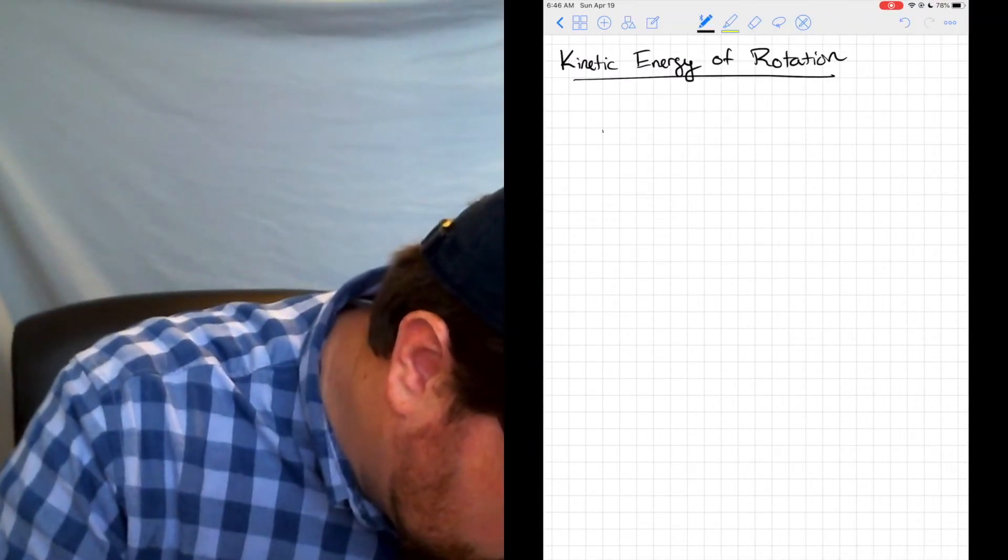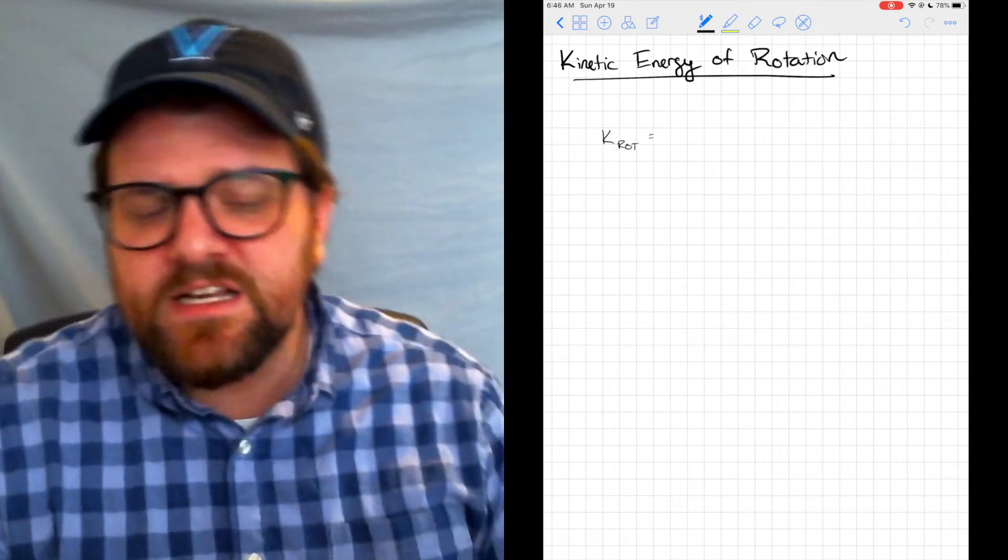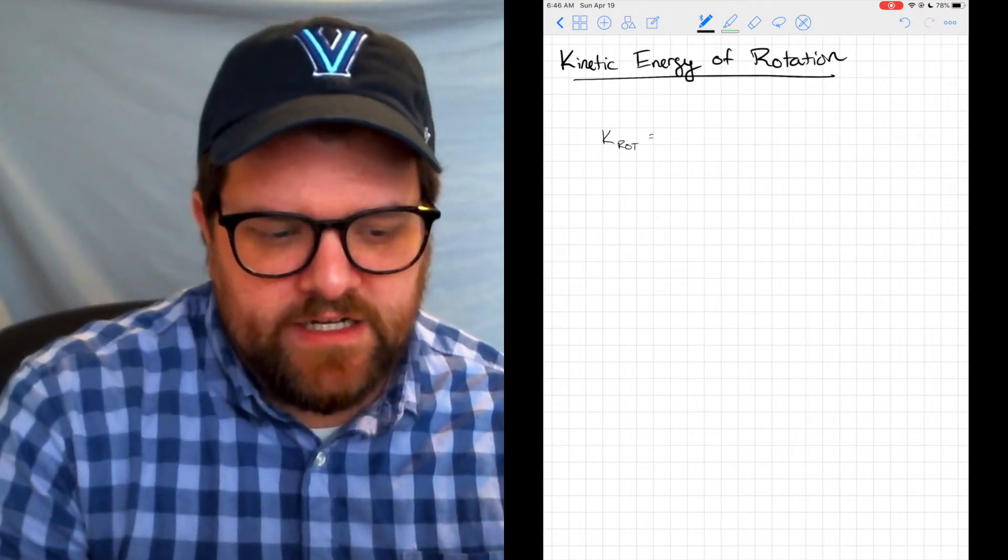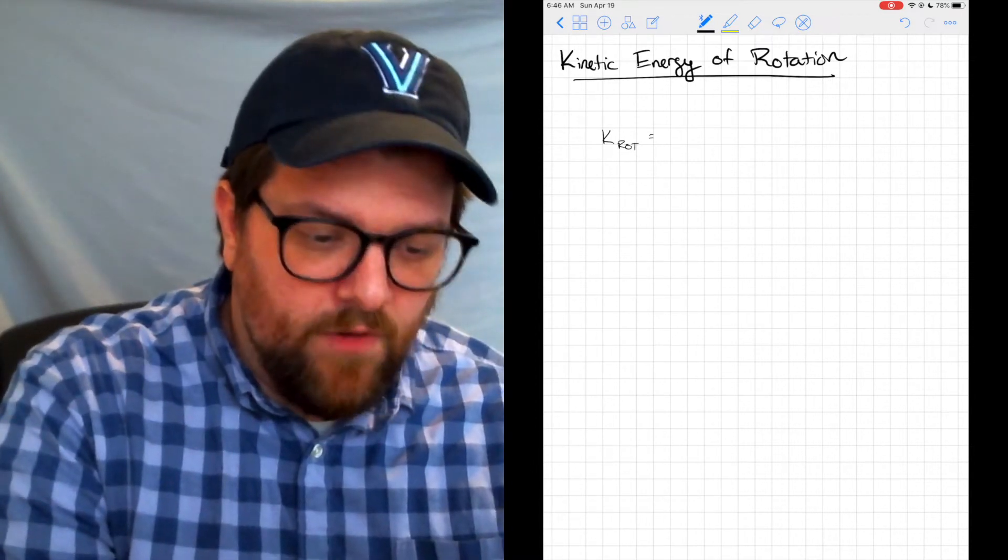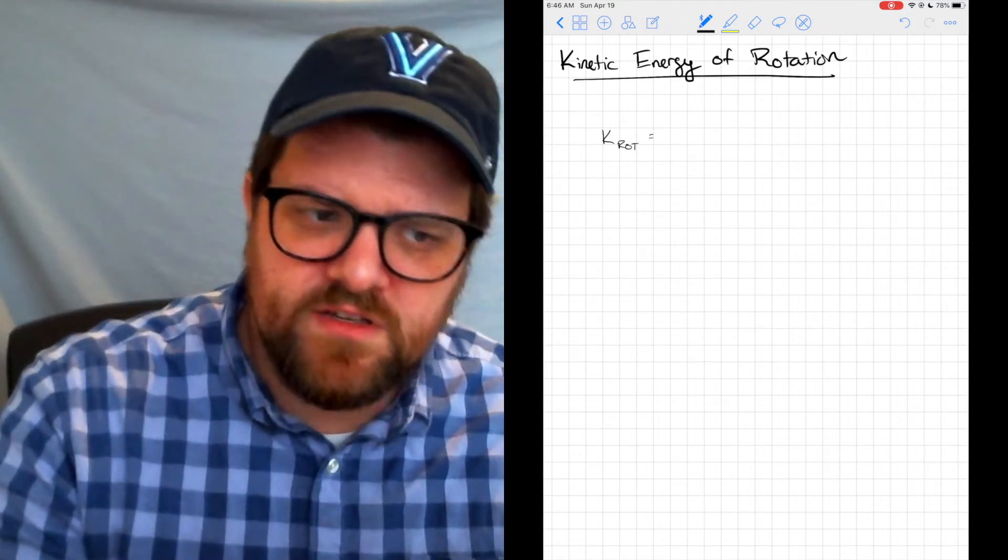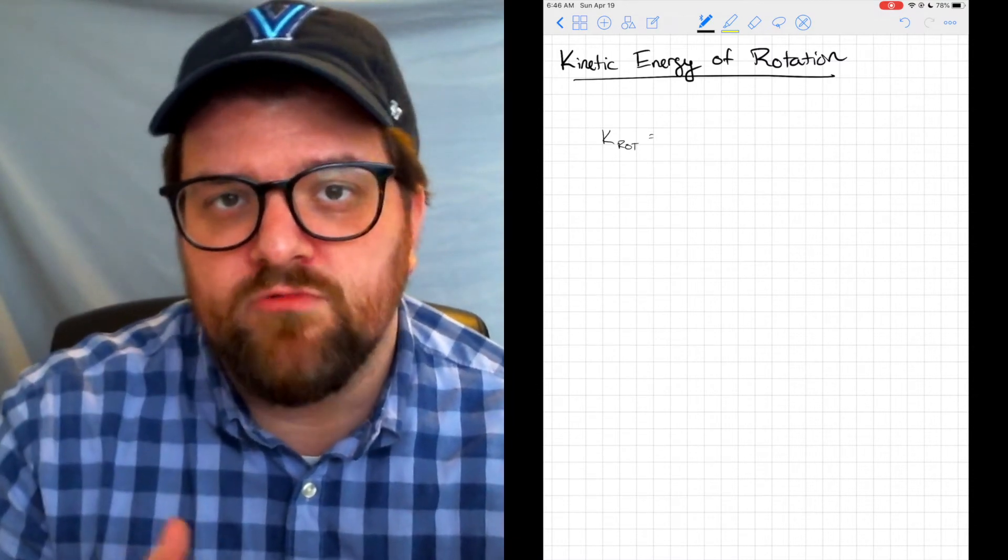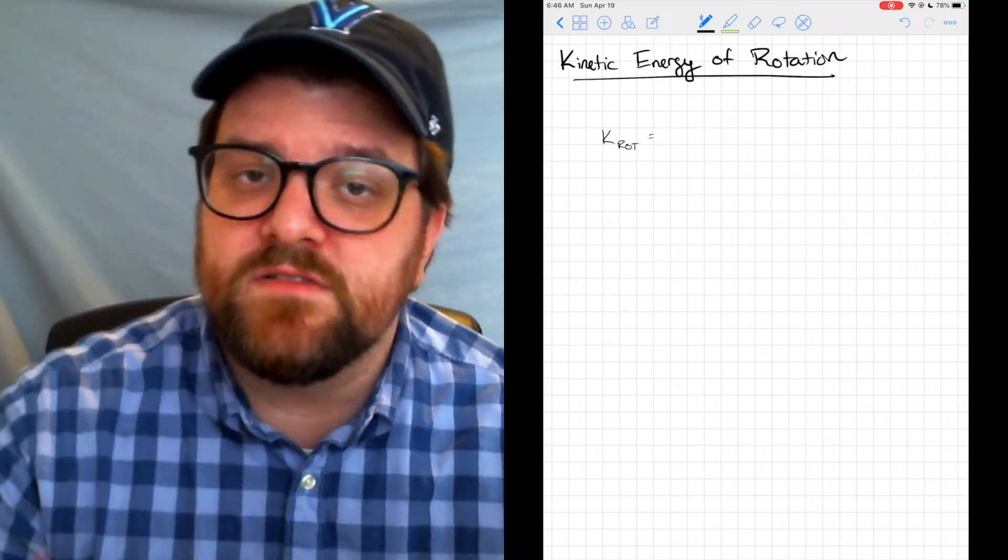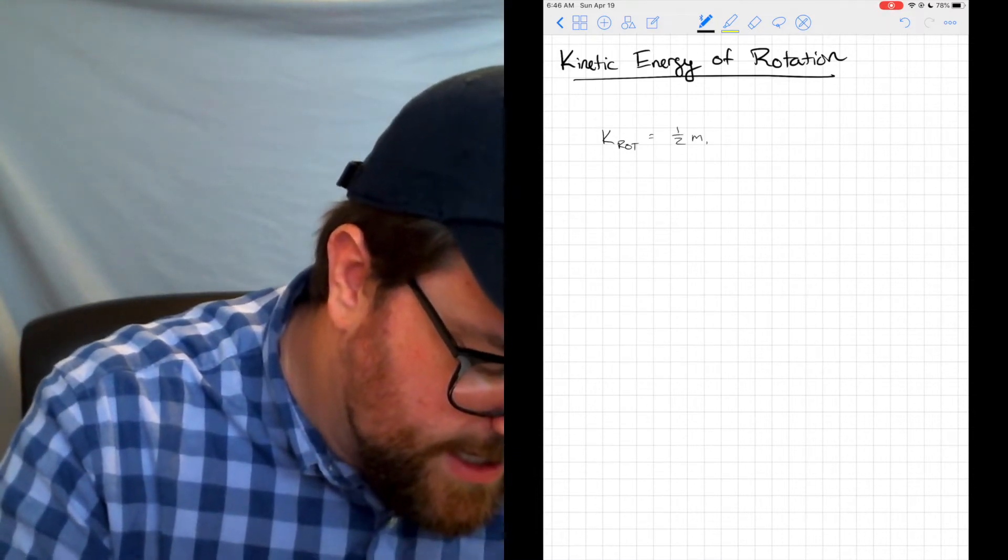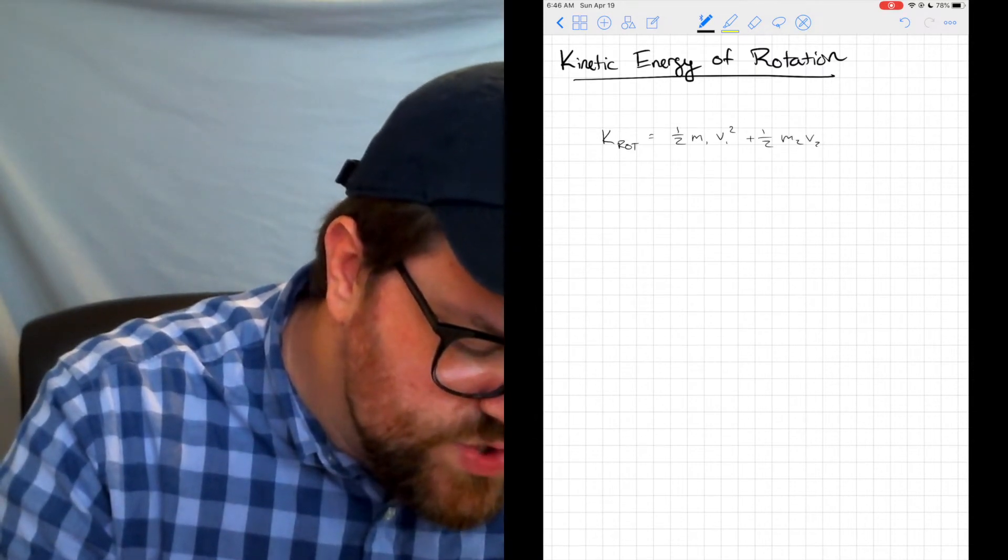If I think about the kinetic energy due to rotation, I'm going to call that K or K_rot. I'm going to say that that's equal to all of my little bits of matter that are moving. And they're all moving a little bit differently. They're all going to have slightly different velocities based on where they are relative to the pivot point, relative to my axis of rotation.